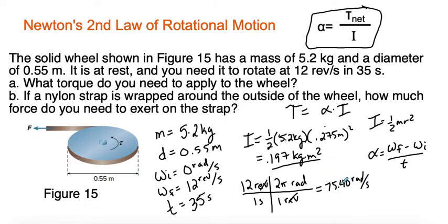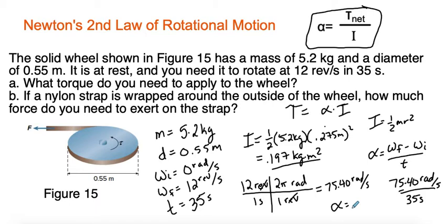Since we're going from 0 to 75.40 radians per second, the change in angular velocity is just 75.40 radians per second. Dividing by our time of 35 seconds gives us an angular acceleration of 2.15 radians per second squared. So we now have both our moment of inertia and angular acceleration.